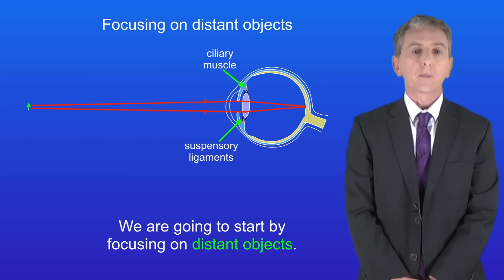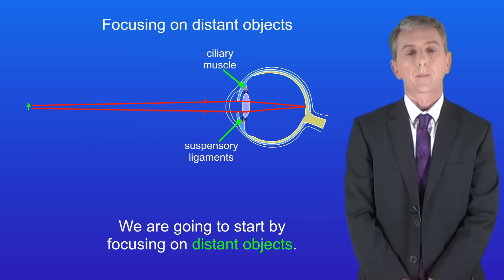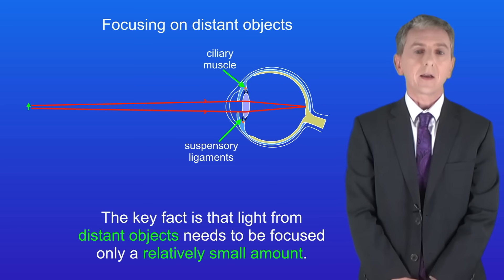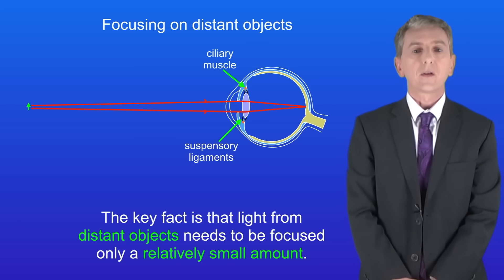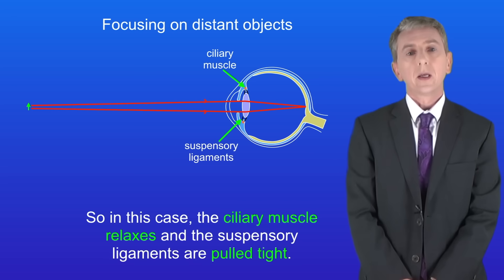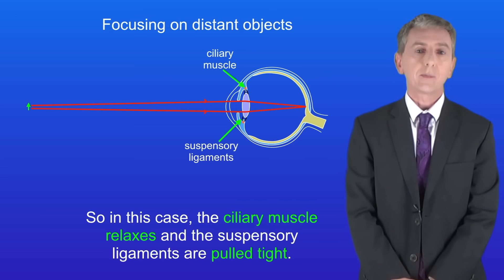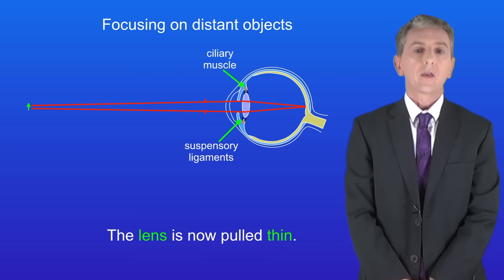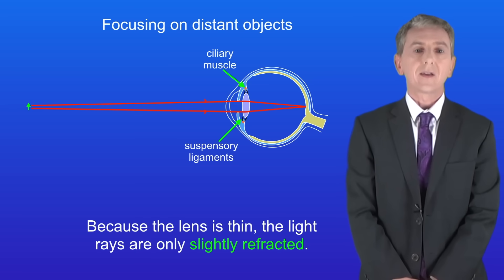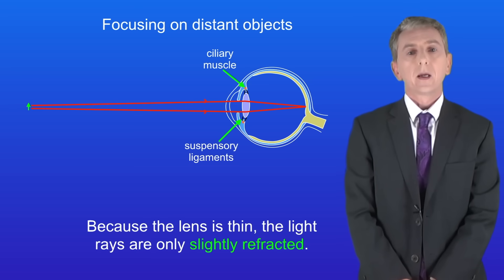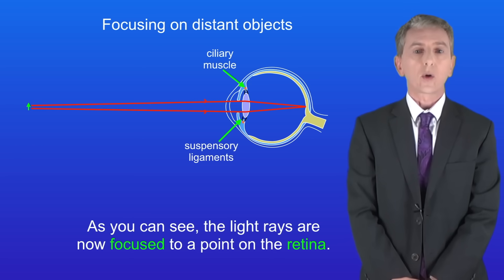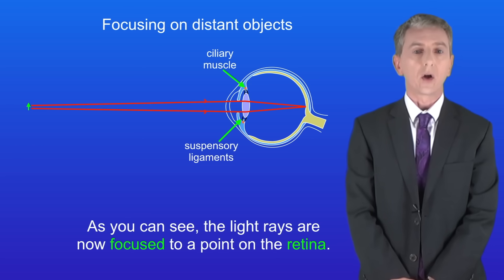When focusing on distant objects, the key fact is that light from distant objects needs to be focused only a relatively small amount. So in this case the ciliary muscle relaxes and the suspensory ligaments are pulled tight. The lens is now pulled thin, so the light rays are only slightly refracted, and as you can see the light rays are now focused to a point on the retina.